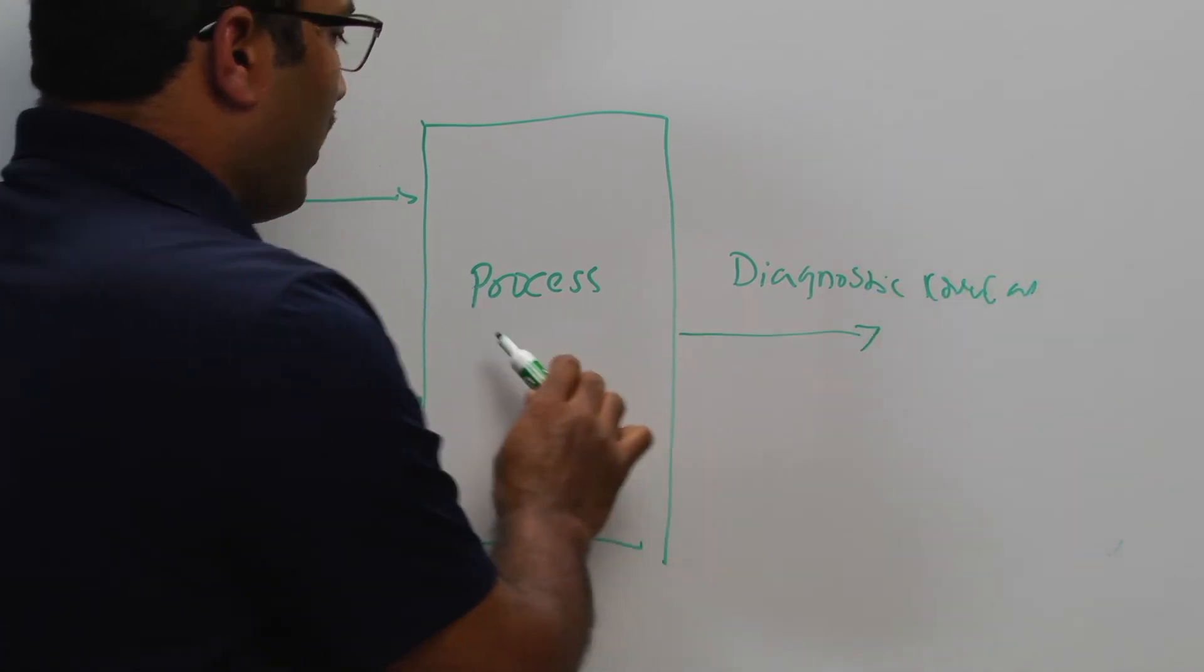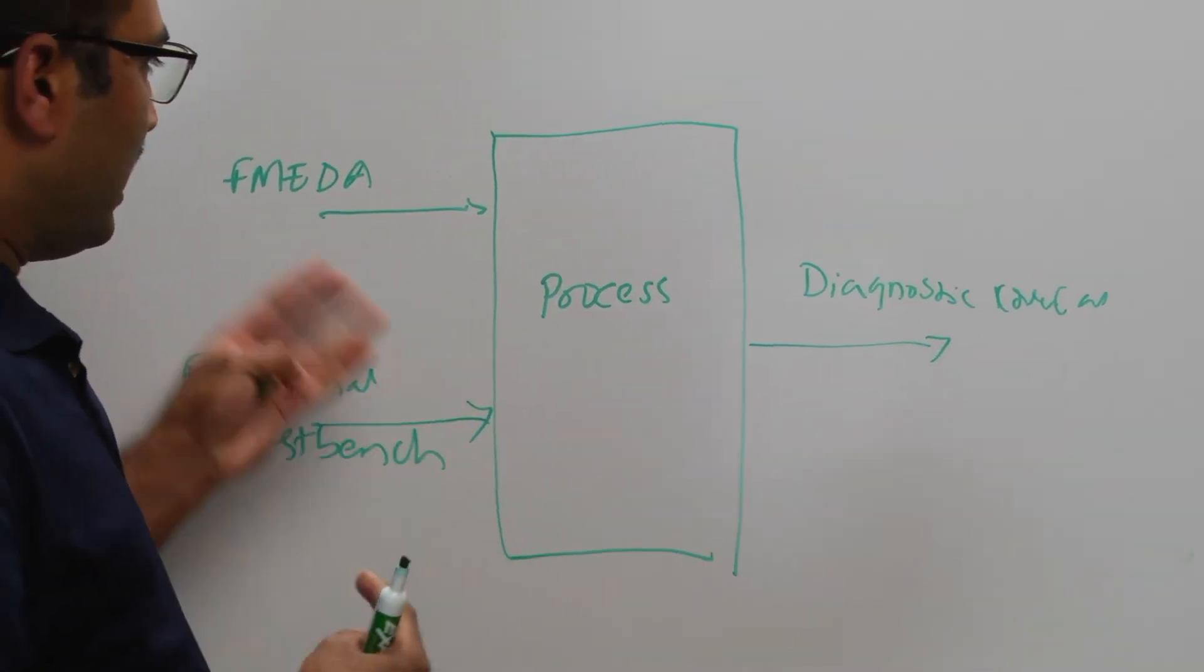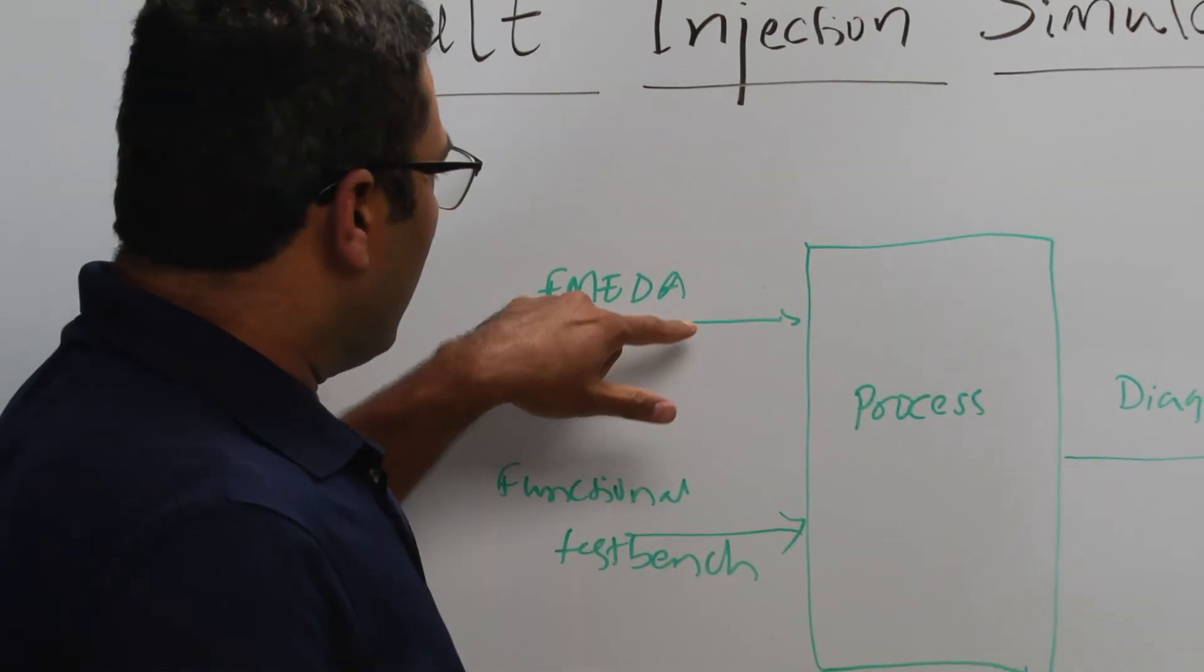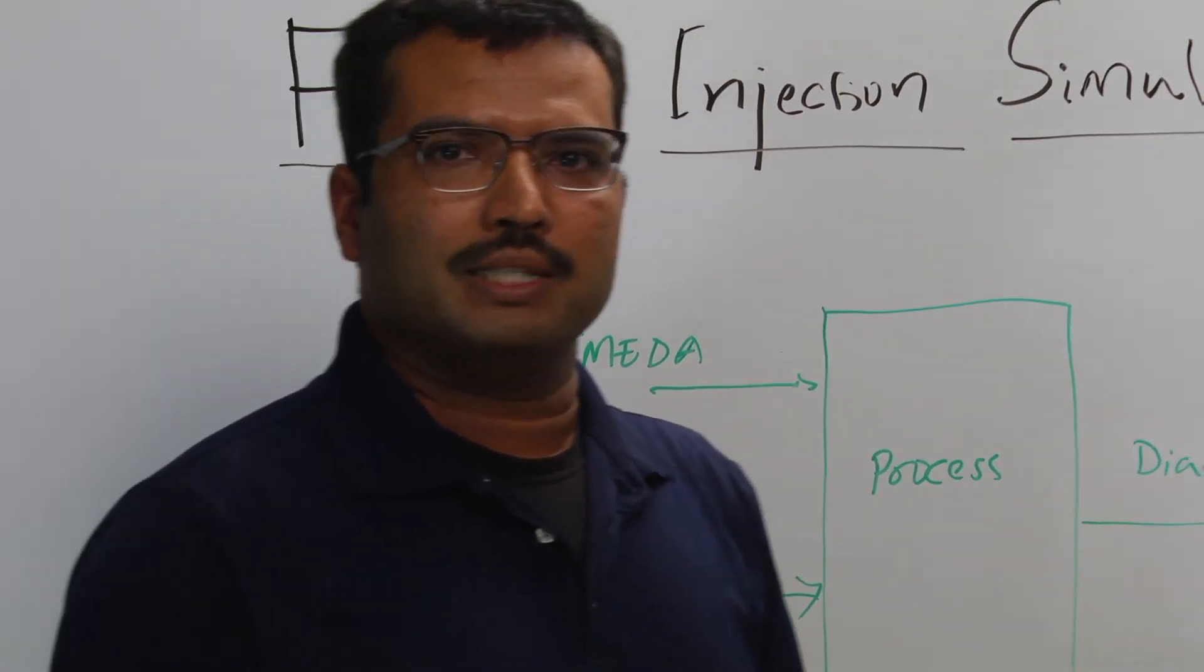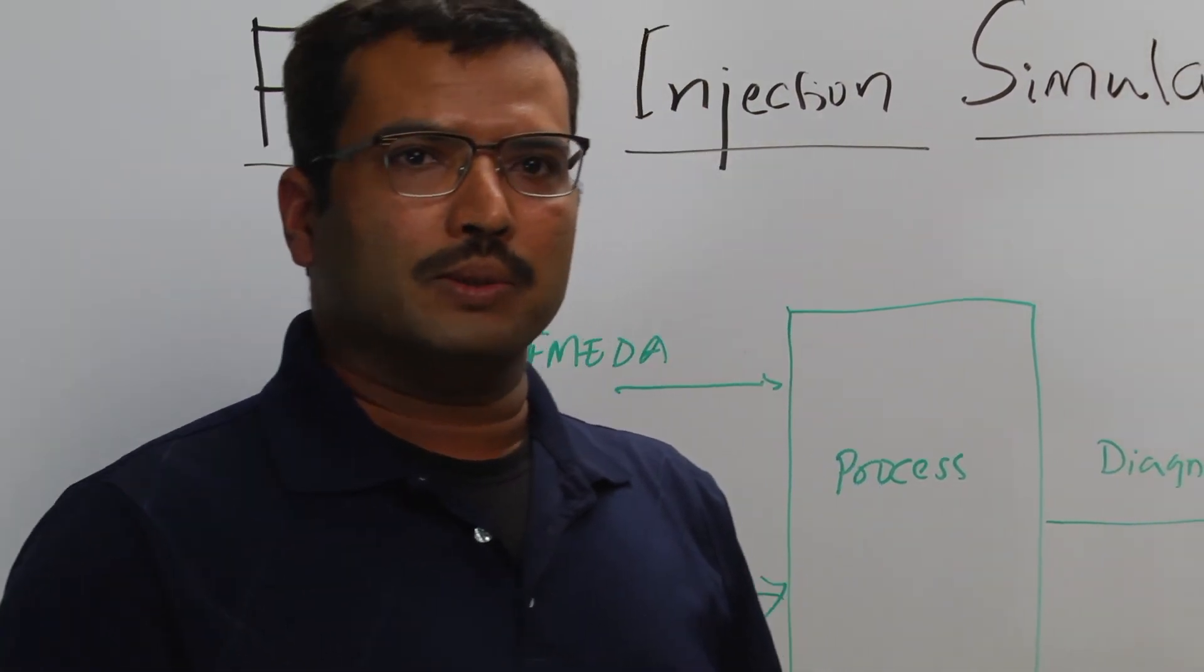So this process takes the two components as an input. What we get from FMEDA is we get a block diagram of the design and test, and we also get the possible failure mode and the effect when the failure happens.